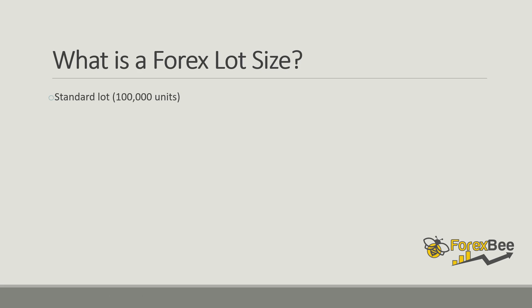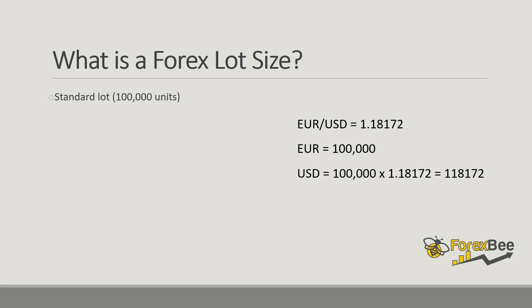The first lot size is the standard lot, which contains 100,000 units of a currency. Let's take an example of a EUR/USD pair which is currently trading at 1.18172. So if you want to buy 100,000 units, or one standard lot of euros, what you will do is go to your trading platform and place an order for 100,000 units of this pair. What will happen is you will receive 100,000 euros in your account, but you will be charged one hundred and eighteen thousand one hundred and seventy-two United States dollars.